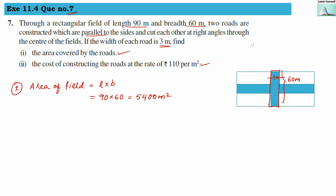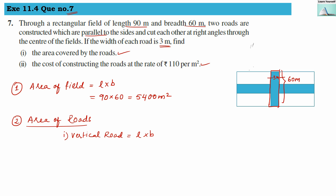From this rectangular patch we can find out the area. Area of the first vertical road = l × b = 60 × 3 = 180 meter square.